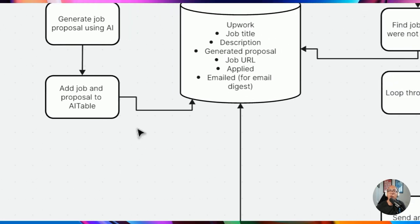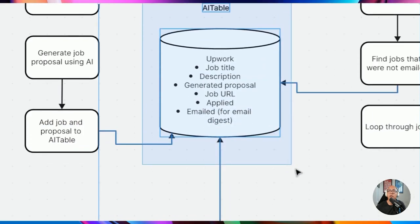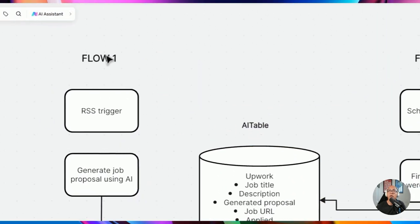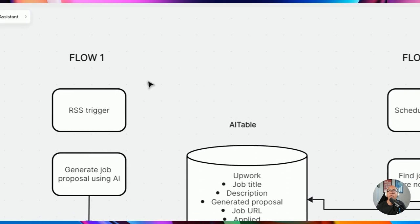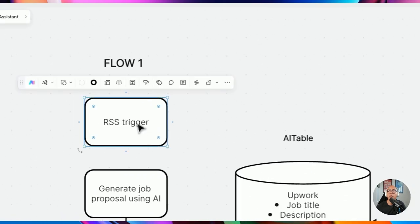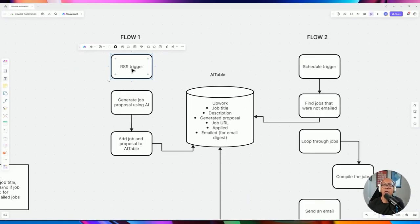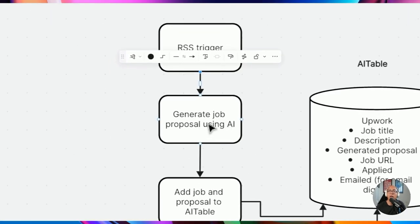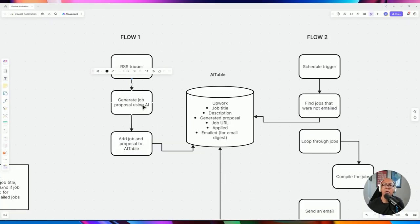There are going to be two flows we're building. Flow one is based on the RSS feed we create in Upwork — any job posted matching our filter criteria triggers ActivePieces, and from there we generate job proposals using AI. You can use any LLM: OpenAI, Perplexity — it depends on your preference.